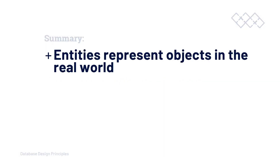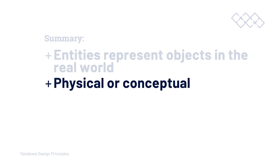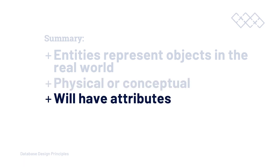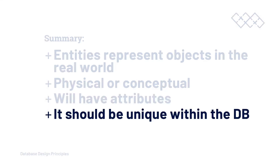So let's do a quick recap. Entities represent objects in the real world. They can be physical or conceptual, tangible or intangible, but they will have attributes — that's the important key here. When we're trying to develop our preliminary entity list from a scenario or from the requirements, we're thinking about finding entities which may have attributes associated to them. Remember, entities are tables and attributes are going to be our fields in the table. It's also worth noting that entities should be unique, so it's worth removing any duplicate entities at the start of the design process.